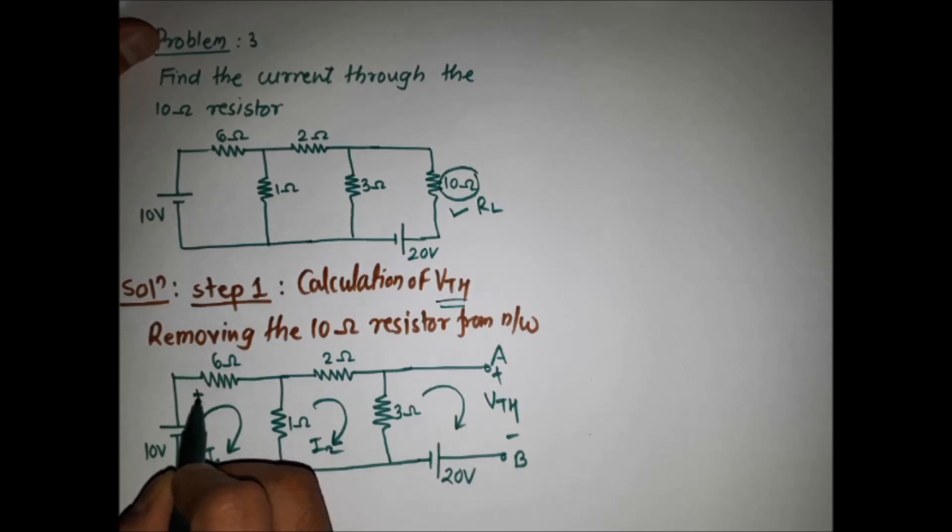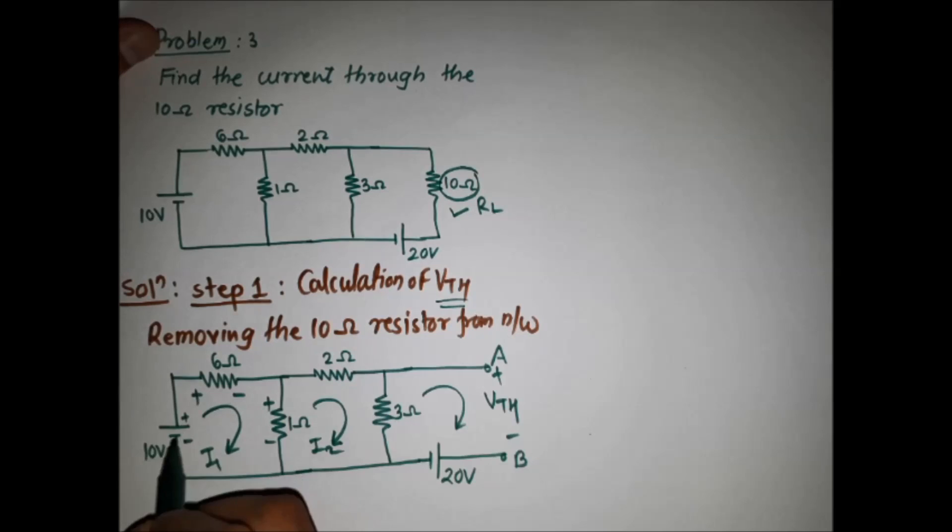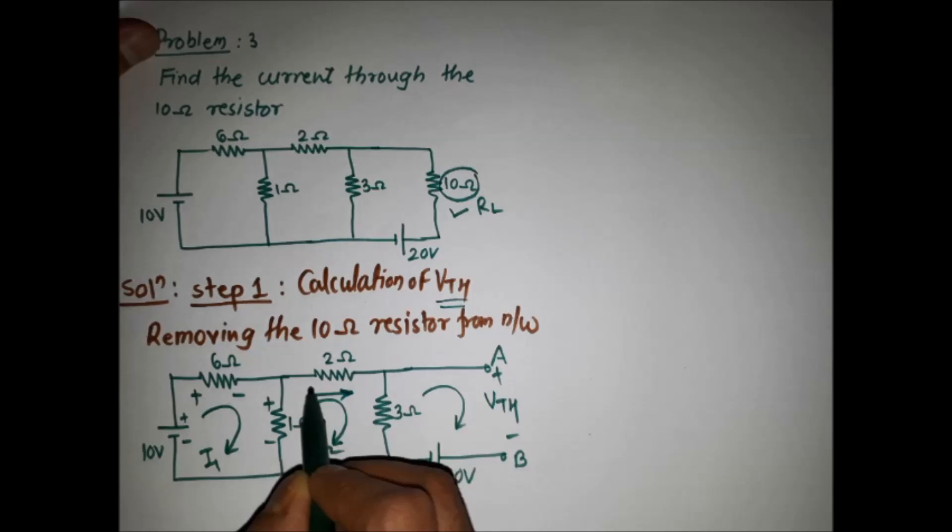The sign convention applied is: starting terminal plus, end terminal minus, then minus plus accordingly. For loop 2, with current flowing through the 2 ohm resistor, the convention is starting plus, end minus, continuing accordingly.